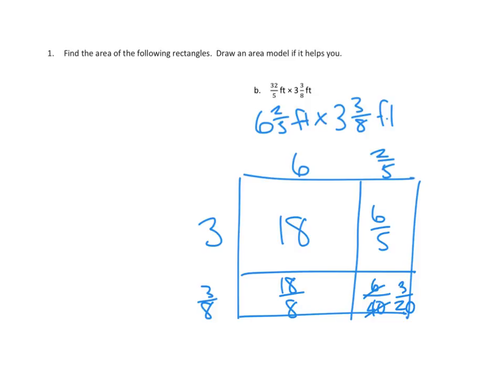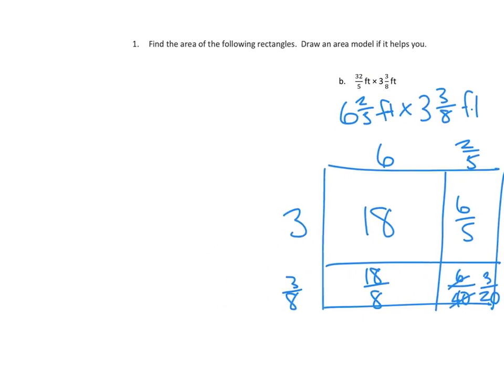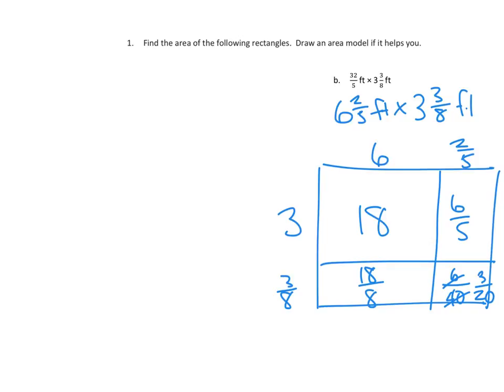So now, it looks like we've got to add all these pieces together. We've got 18 plus 6 fifths, plus 1 and 1 fifth, plus 18 eighths, so 16 eighths would be 2 wholes, plus 2 more eighths. 2 eighths, I don't have to write 2 eighths, I could just write 1 fourth, and then plus 3 20ths.